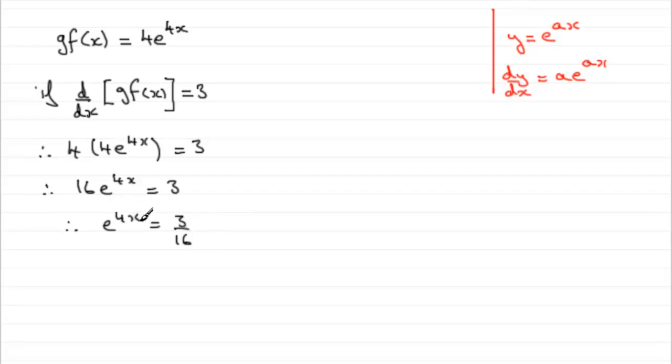Now, to work out what 4x is, we need to take natural logs of both sides. If we take the natural log of e to the 4x, we just get 4x. And then we take the natural log to this side, we have the natural log of 3 over 16.